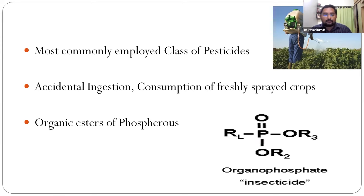Structurally, organophosphorus compounds are organic esters of phosphorus. In the central part, you see the phosphorus atom surrounded by three side chains R1, R2 and R3, and it has formed an ester linkage with oxygen - that bondage we call the oxon bondage. Through this side chain, the phosphorus compound will bind to its target, the target being the acetylcholinesterase enzyme.